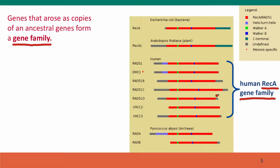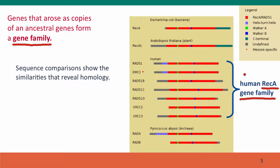There are seven different genes with different names in this family, all closely related to each other. We know they're closely related because we can line them up and compare their amino acid sequences, which are much too similar to have arisen by chance. So we conclude that these similarities exist because of homology — these genes are similar because they're descended from a distant common ancestor.